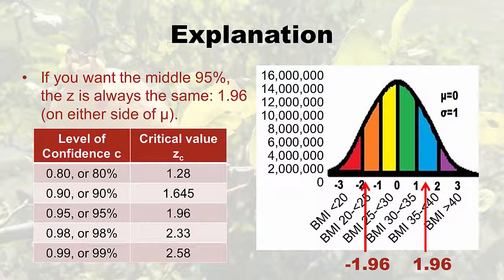I focus on 95% because I memorized 1.96. For the middle 95%, the Z is always 1.96 on either side — you just look it up. The 95% confidence interval is the most popular in healthcare. In the olden days we used 99% more, but 95% has always been popular. Other confidence levels aren't as common but are worth knowing.